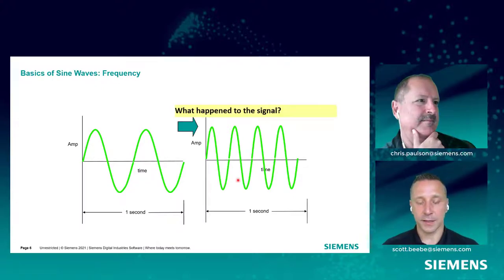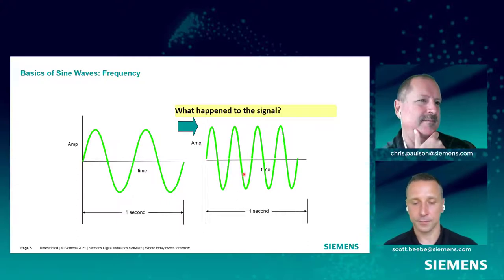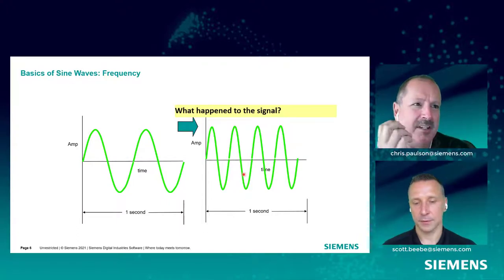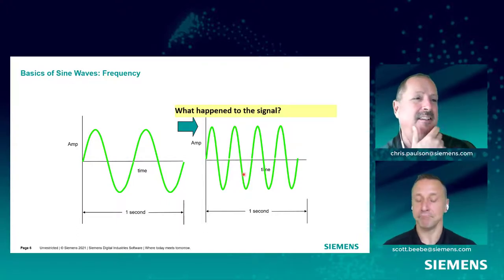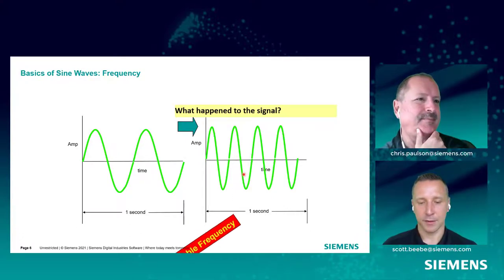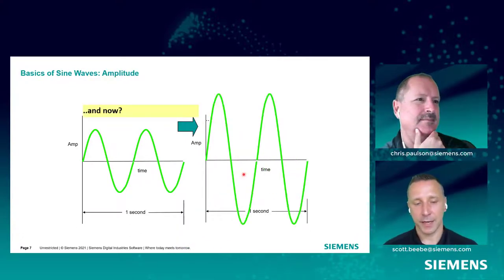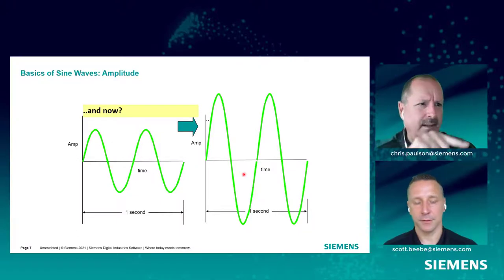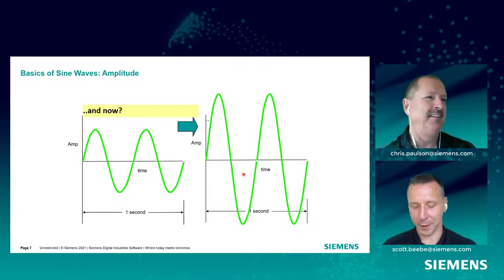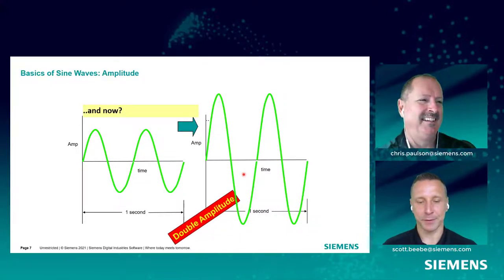If I take this signal and modify it, what's happened here, Chris? You've doubled the frequency. That's right — I kept the amplitude the same but doubled the frequency. And this one here? You've doubled the amplitude. That's right, it's doubled the amplitude. So like I said, we're going to start easy and just build on this.